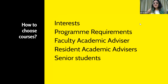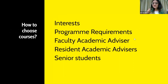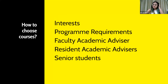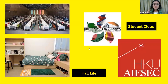When choosing your courses, keep a number of things in mind. First, keep track of your program requirements because you need to meet them to graduate. But at the same time, do things that interest you, because if you don't like it, you won't do well, and your CGPA will reflect that. If you're still having trouble, you can talk to your faculty academic advisors, your resident academic advisors at your hall, or senior students for guidance.